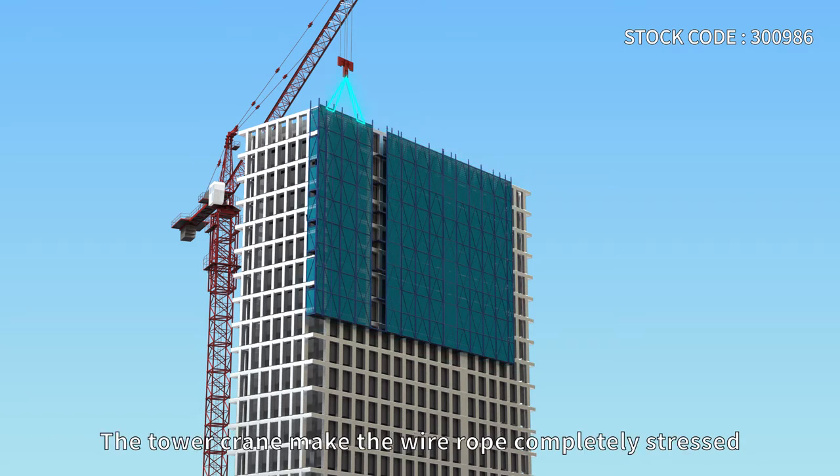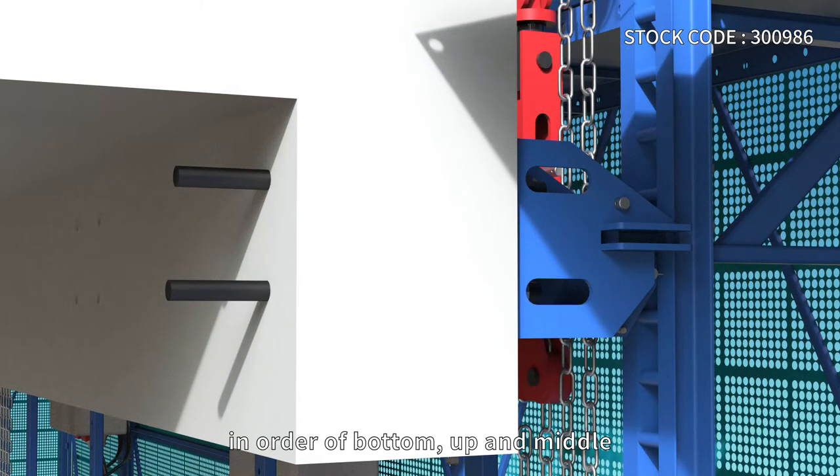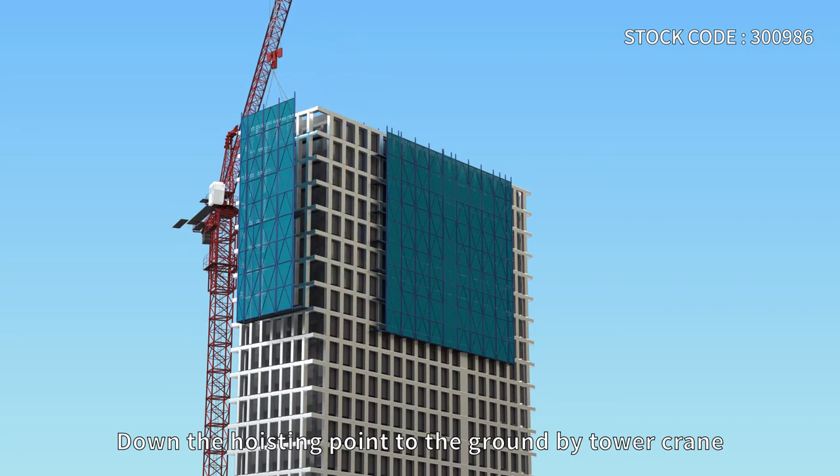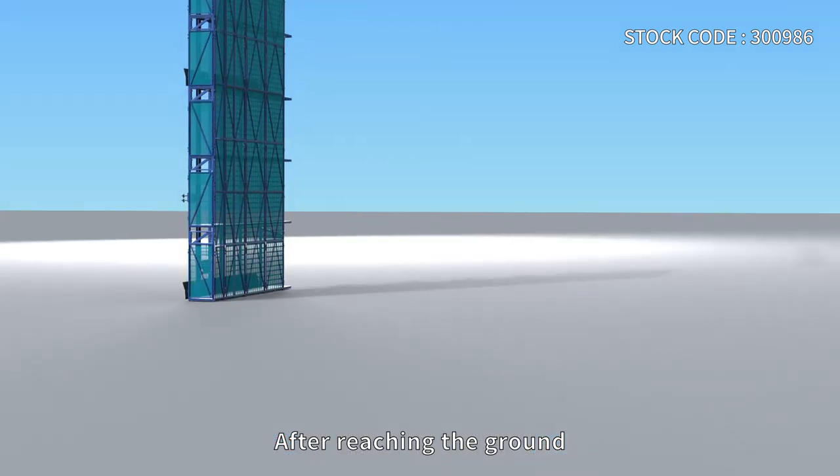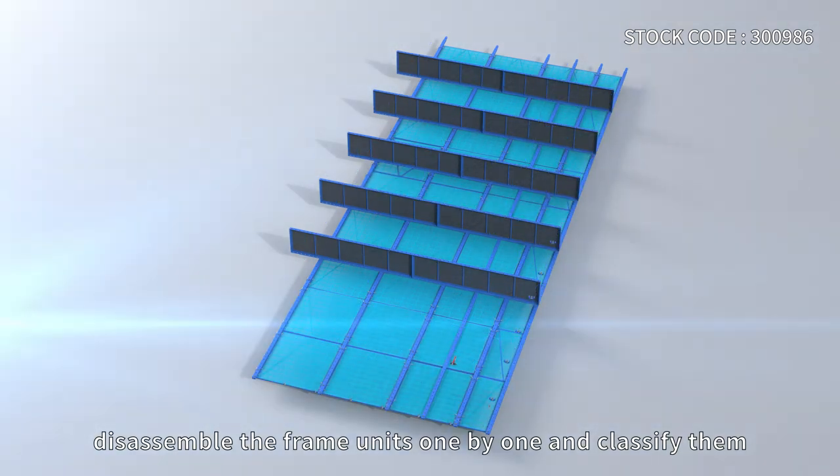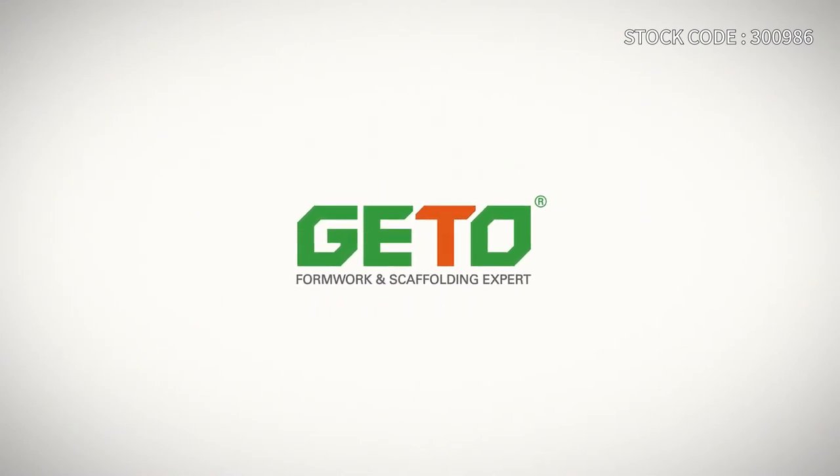The tower crane makes the wire rope completely stressed. Then dismantle the attached support in order: bottom, top, and middle. Lower the hoisting point to the ground by tower crane. After reaching the ground, disassemble the frame units one by one and classify them. JITO self-climbing platform—a synonym for safety.